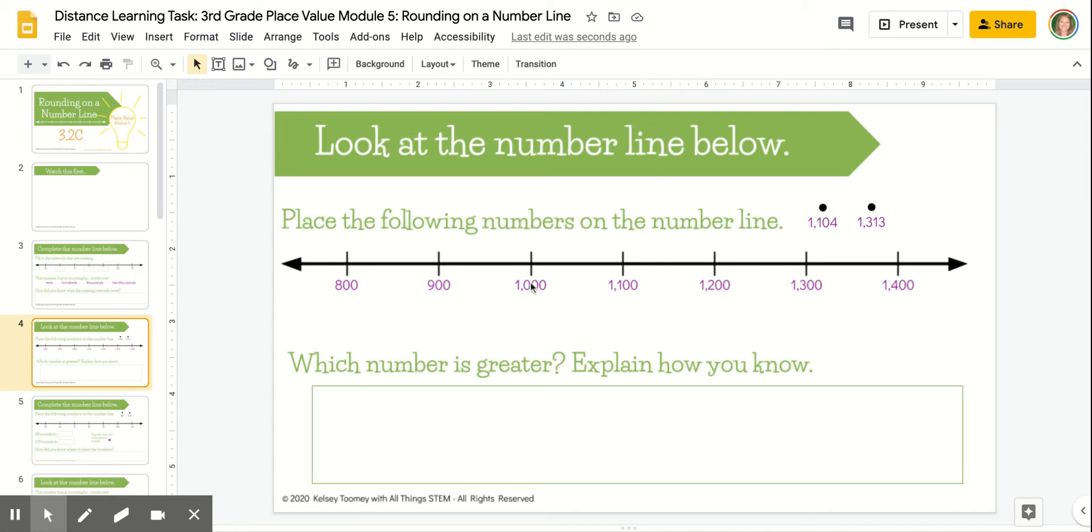You'll look at what the number line is counting by, you'll look at the number you're trying to place, and all you'll need to do is click and drag to place it where you want it on the number line. Then you're going to use that model to determine which number is greater and explain how you know.